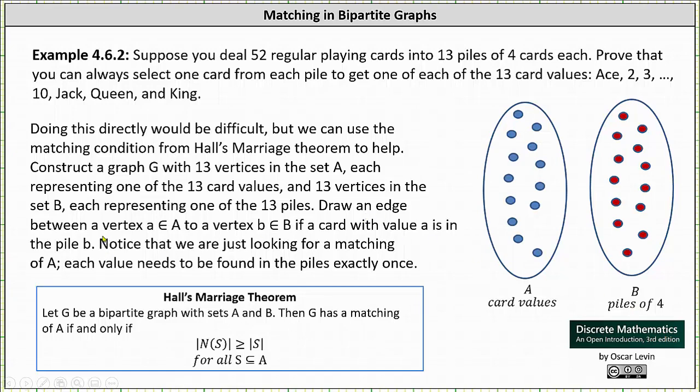Draw an edge between a vertex A in set A to a vertex B in set B if a card with the value A is in the pile B. Notice we are just looking for a matching of A. Each value needs to be found in the piles exactly once.